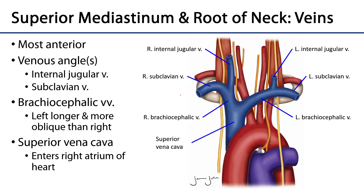Veins are a little more symmetrical — they drain blood back to the heart, specifically to the right atrium. Coming down from the jugular foramina in the cranium are the right and left internal jugular veins, which drain the head, face, cranial cavity, and elements of the neck. These are joined by the subclavian veins, which predominantly drain the upper limbs but also help drain the thorax and elements of the head and neck.